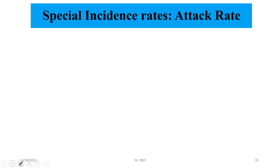Hello. In measures of morbidity, we have discussed incidence rate and prevalence rate, point prevalence and period prevalence. So in incidence rate, there are some special incidence rates, which are known as attack rate and secondary attack rate. We need to understand how to calculate secondary attack rate.